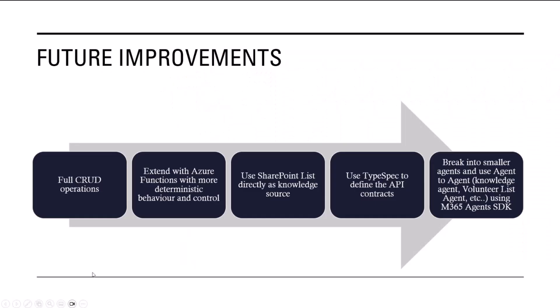As for future improvements — things we thought about but didn't implement: full CRUD operations. We can currently create list items and read them back, but it'd be nice to be able to change a date or remove a volunteering entry. We also think a big one would be adding some Azure Function code in between the agent and the API, to be more deterministic and control it better. And we think using TypeSpec for the API contract would be good — we tried Kiota and GitHub Copilot, but maybe next time we'll use TypeSpec.